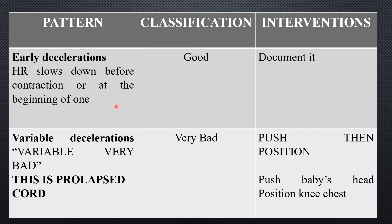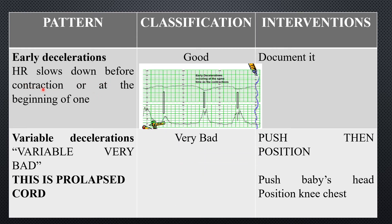Early deceleration: the heart rate slows down before the contraction or at the beginning of the contraction. So when the contraction starts, the heart rate slows down — that is early deceleration. This is different from late deceleration, which occurs at the end of or after the contraction.